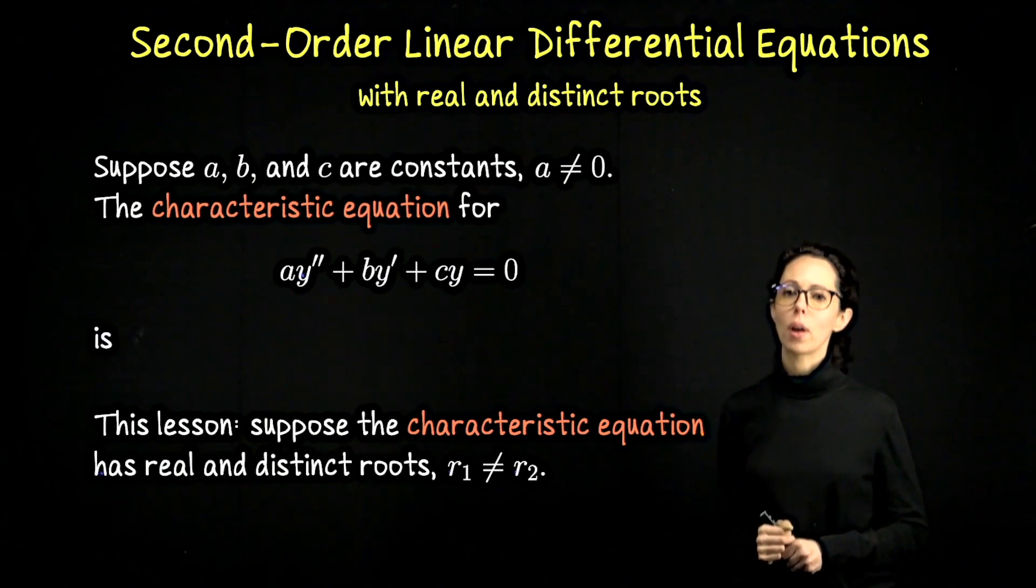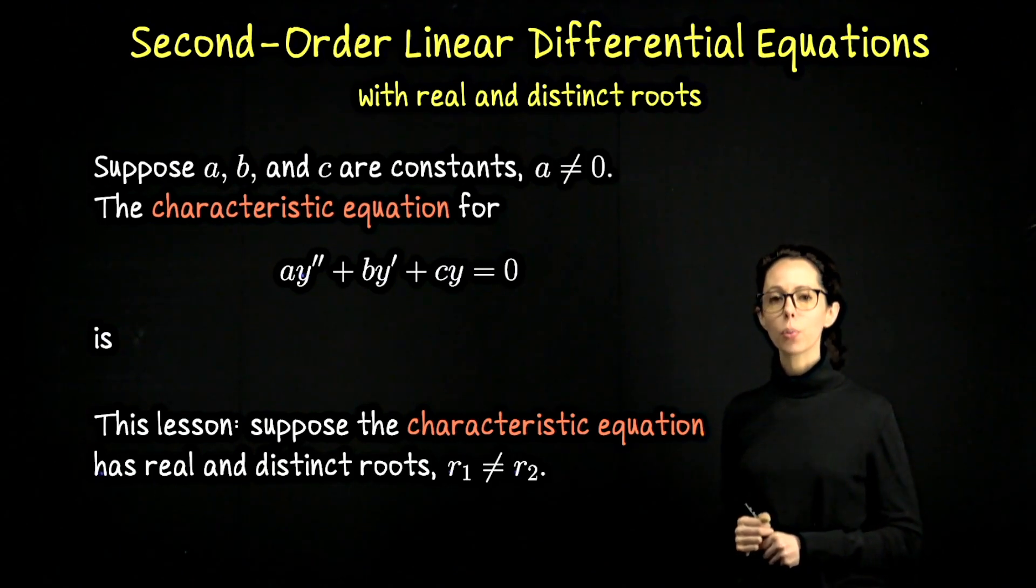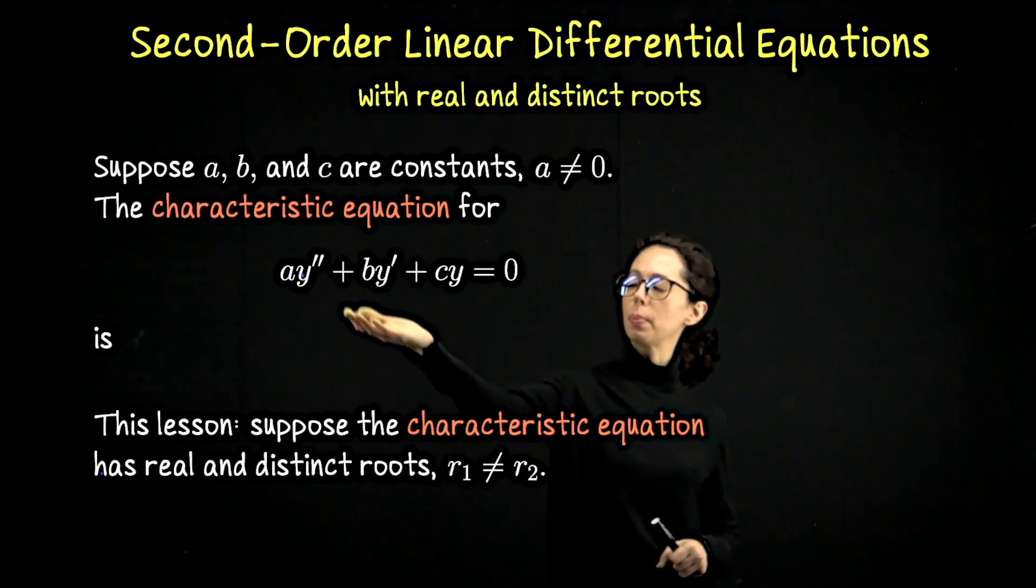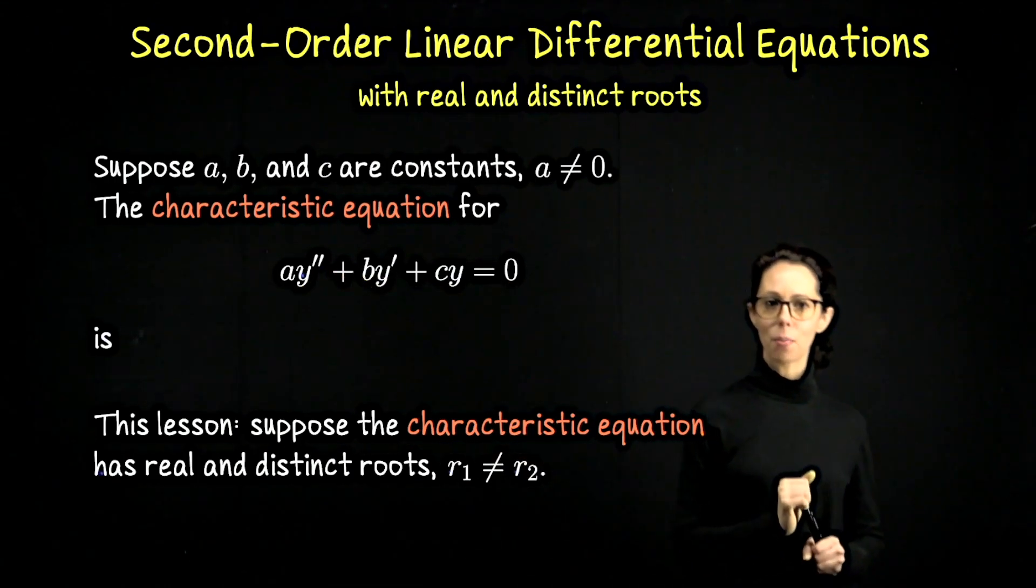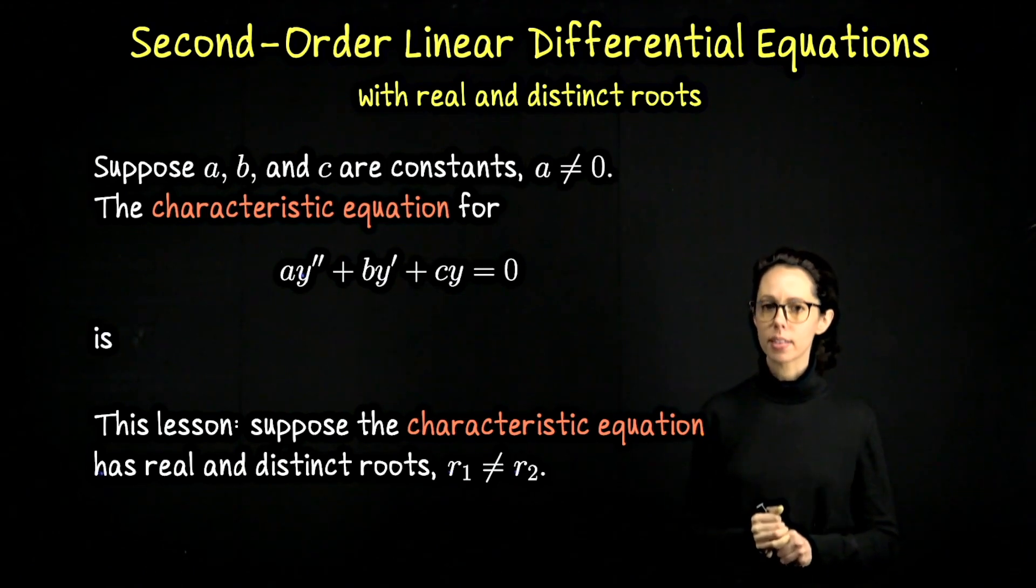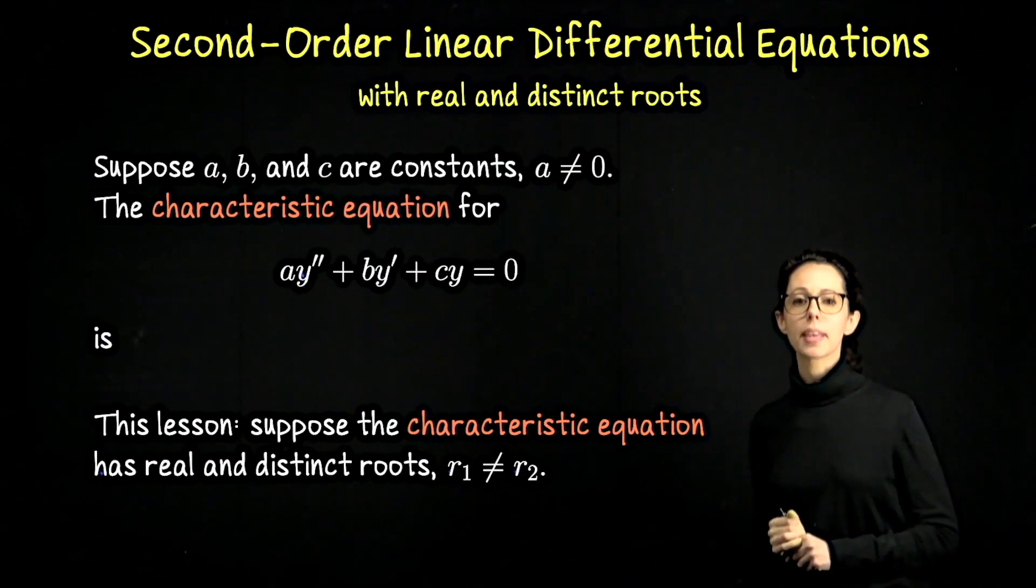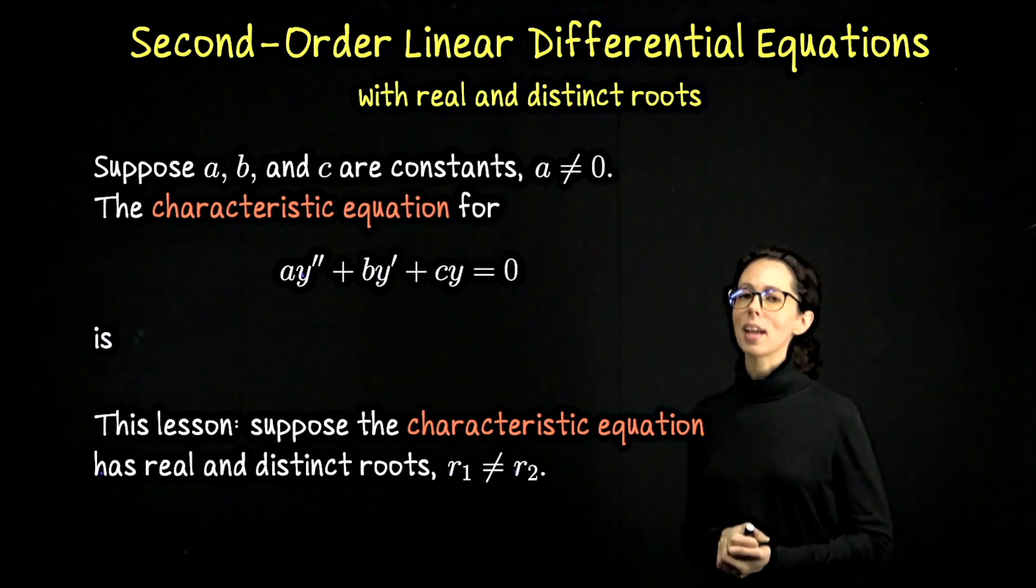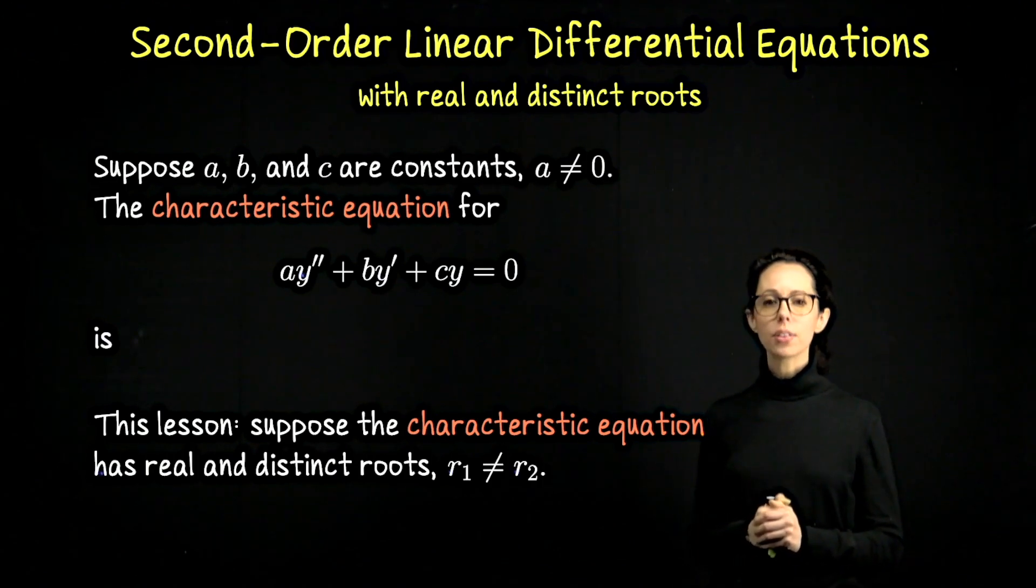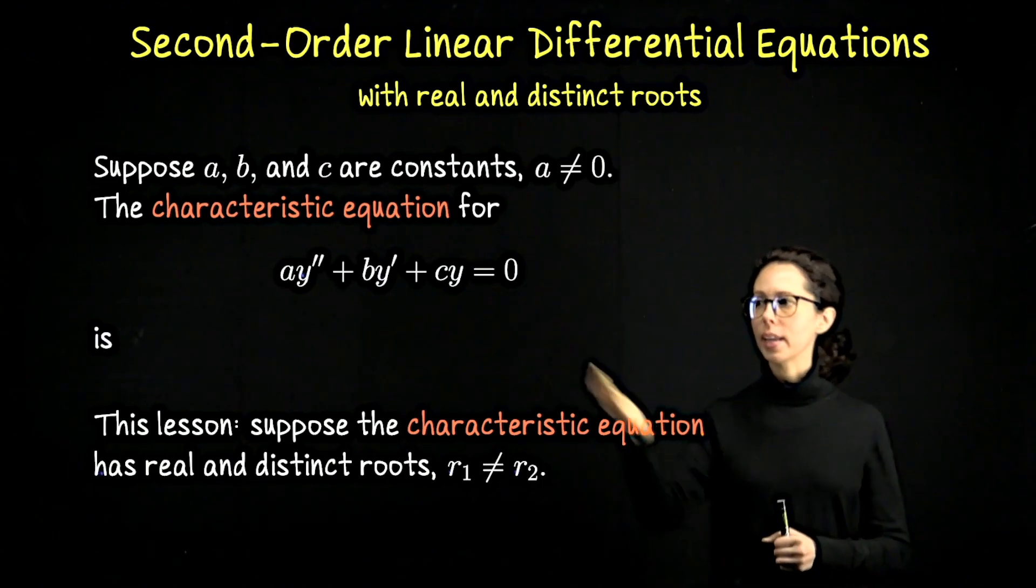In this video, we are going to look at one situation that arises whenever we study second order differential equations of the form ay double prime plus by prime plus cy equals zero. So these are called linear second order differential equations with constant coefficients. The constant coefficients are the numbers a, b, and c, where a is not zero because if it were, it wouldn't be a second order equation. We also call these homogeneous because the right hand side is zero.